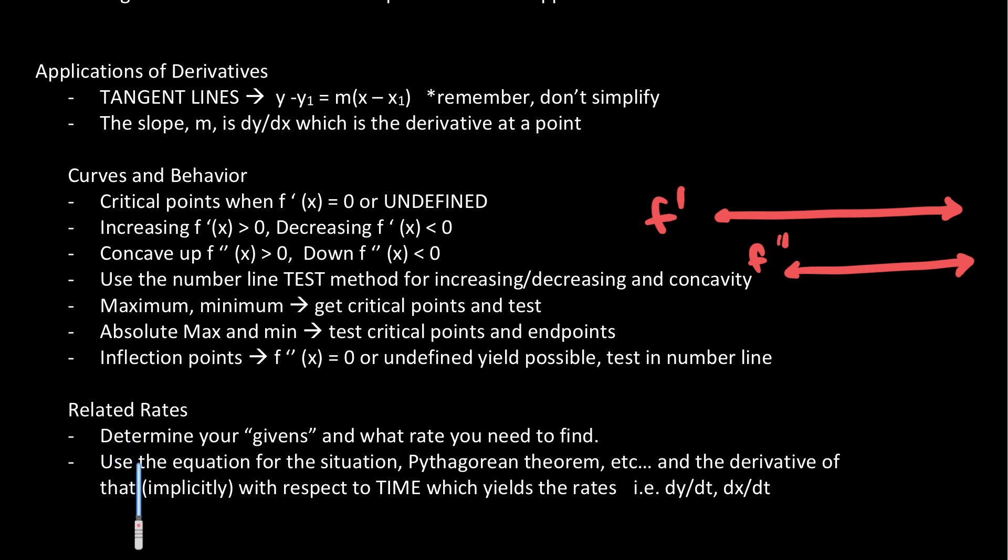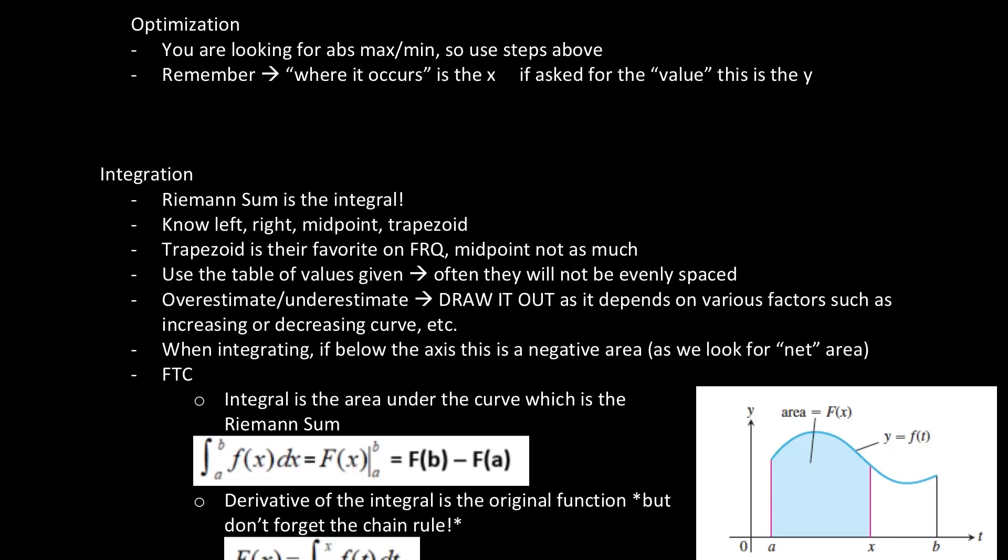A lot of applications. Related rates. For related rates, determine your givens and what the rate you need to find. Use an equation for the situation. Sometimes it's the Pythagorean theorem. Oftentimes it'll be the Pythagorean theorem. And then take the derivative of that implicitly with respect to time, which you will lead to have dy/dt, dx/dt. So next up is optimization. And remember, for optimization, you're looking for absolutes. So use the steps we talked about earlier. And remember, when you're looking for where it occurs, that's the x value. And if you ask for the value, then you're looking for the y.